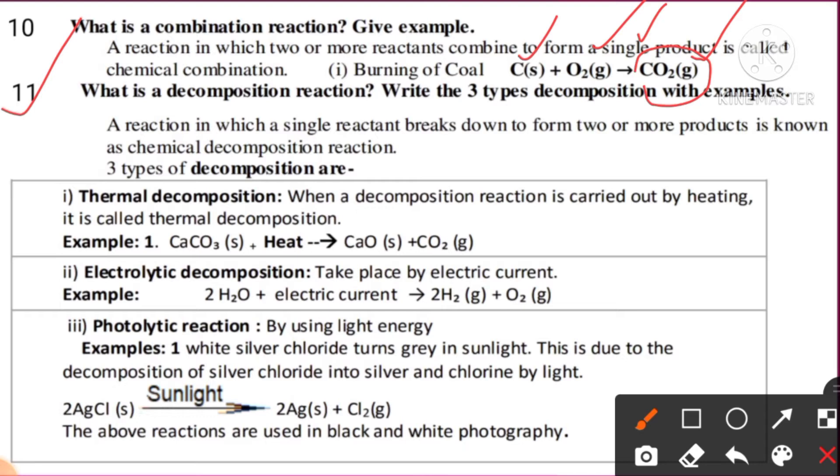First, what is a decomposition reaction? A reaction in which a single reactant breaks down to form two or more products is known as a decomposition chemical reaction. Its three types of decomposition reactions are: first, thermal decomposition reaction; second, electrolytic decomposition reaction; third, photoelectric decomposition reaction. They may ask individually also.